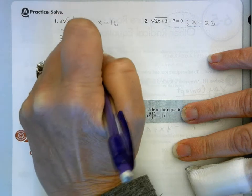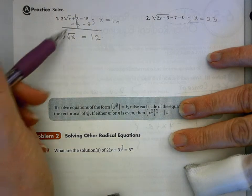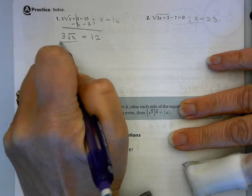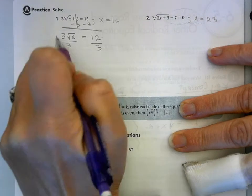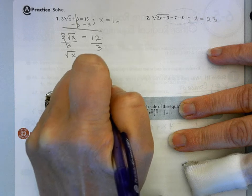That's 0, and 15 minus 3 is 12. And then now I want to get rid of the 3 in front, because I'm trying to get rid of any outside influence on the square root. So I'm going to divide both sides by 3. And that's just 4.